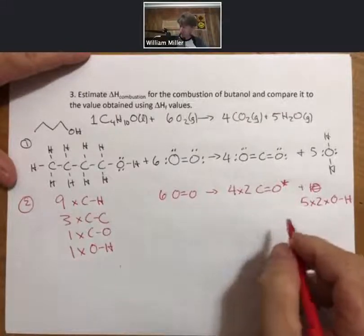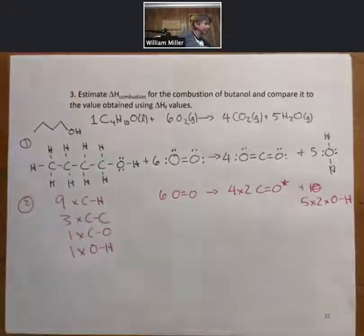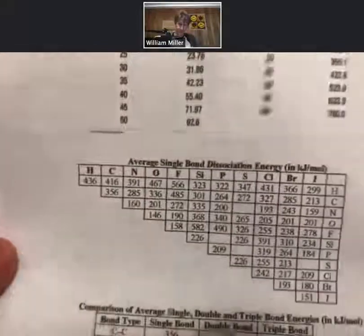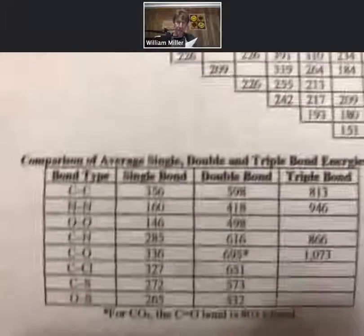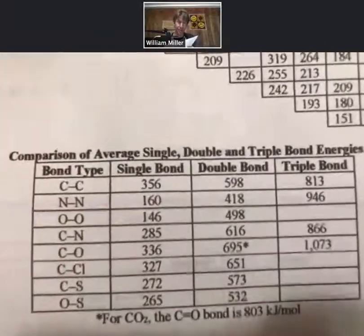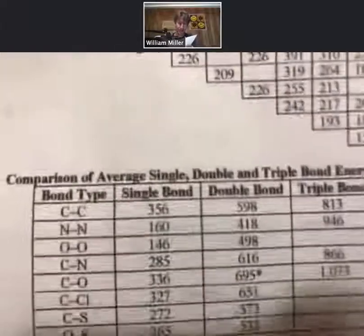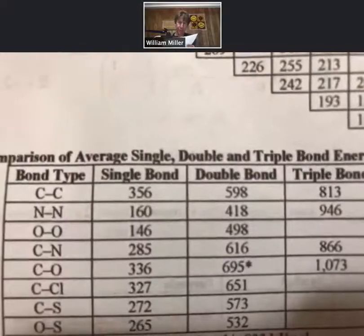Now I have energies for those. So I go to my list here, and I see that these are the single bond dissociation energies. Right below that is a table of double bonds—single, double, and triple bonds of certain atoms.